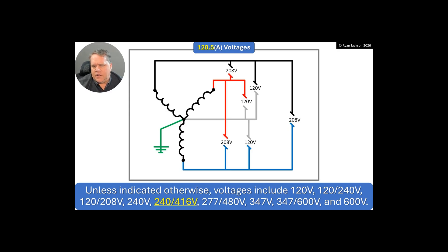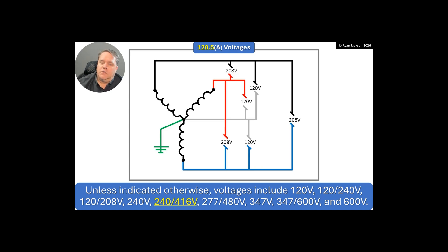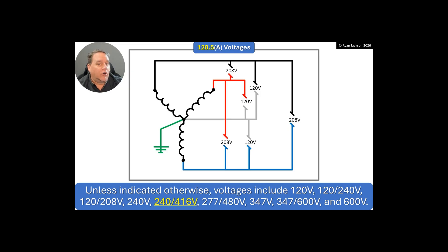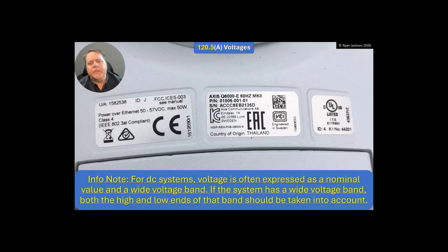Where you'll see 240/416 is in the bitcoin mining world — if you're into cryptocurrency and doing those installations, 240/416 is an international voltage used for cryptocurrency mining. You could also use it for other applications, like equipment bought from overseas that operates at 416 volts. This section just tells us what some of the common voltages are and the voltages used in Article 120. They also added an informational note about DC systems.